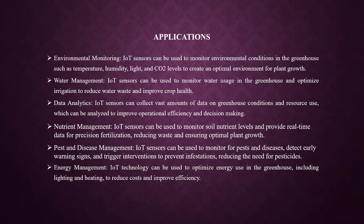Key applications include: IoT sensors monitoring environmental conditions in greenhouses such as temperature, humidity, light, and carbon dioxide levels to create an optimal environment for plant growth. Water management where IoT sensors monitor water usage and optimize irrigation to reduce waste and improve crop health. IoT sensors can also monitor soil nutrient levels and provide real-time data for precision fertilization, reducing waste and ensuring optimal plant growth. They can also be used to monitor pests and diseases and for energy management.